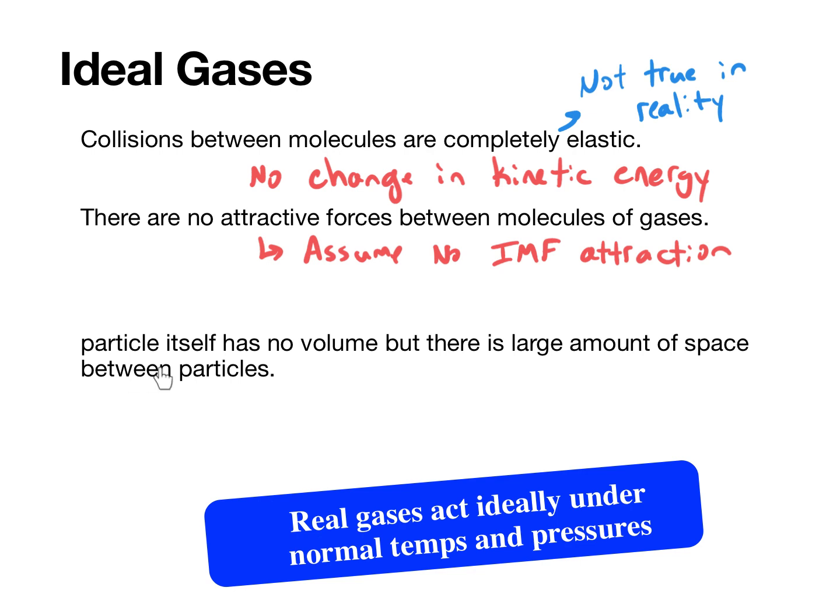Finally, the particles themselves have no volume compared to the total volume of the gas. So we all know that gas particles are made up of molecules, and molecules have mass, and molecules have volume. But the amount of volume that the gas occupies is so large compared to the actual volume of the true particles that we just assume that the particles do not contribute to the total volume. And so the particle has no volume in our understanding of the ideal gas.